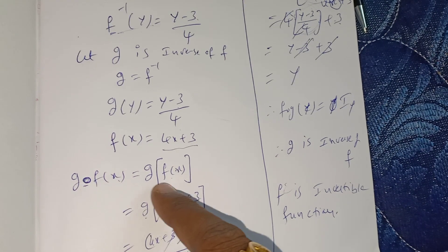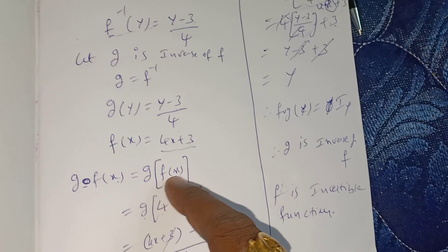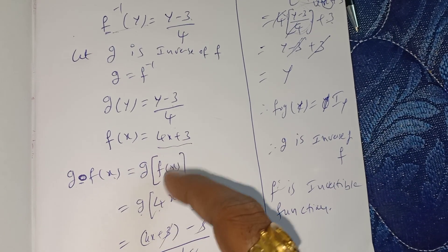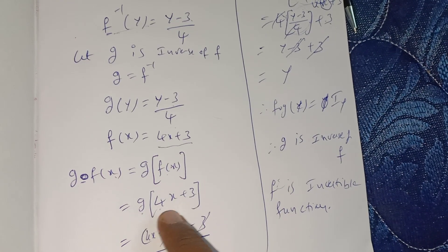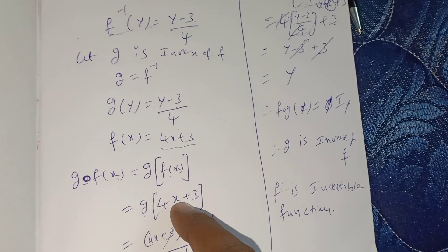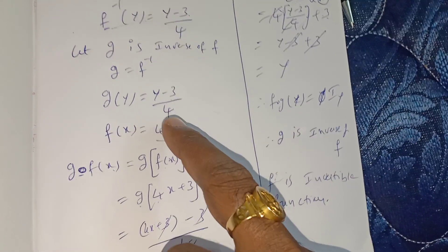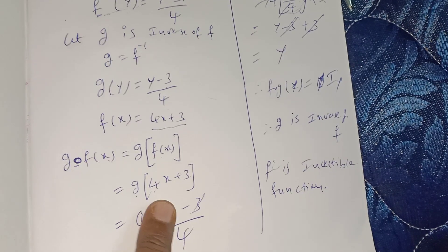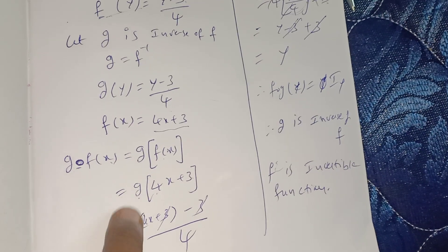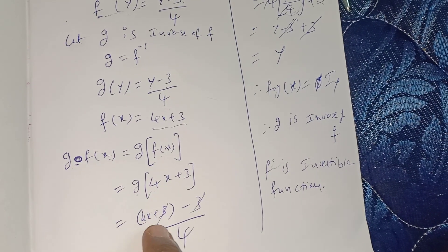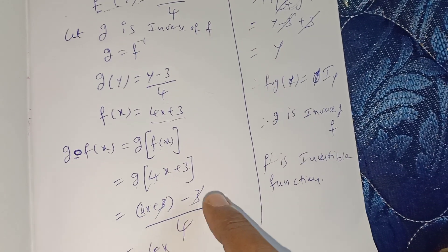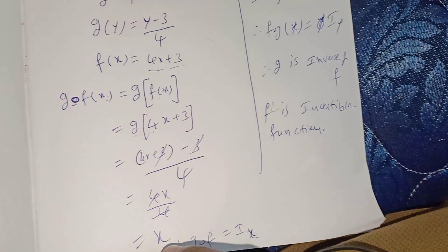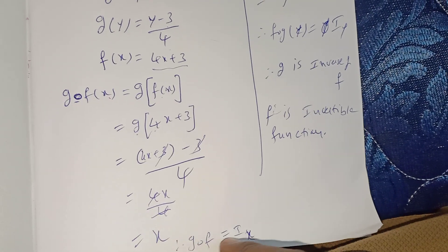Remove the circle and write g(f(x)). We know f(x) = 4x + 3, so substitute 4x + 3 in place of f(x). We know g(y) = (y - 3)/4, so write (y - 3)/4 and substitute 4x + 3 in place of y: (4x + 3 - 3)/4. The 3s cancel, giving 4x/4. The 4s cancel, giving x. Therefore g∘f = Iₓ.